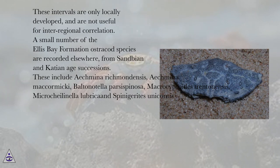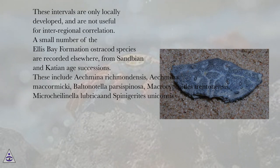A small number of the Ellis Bay Formation ostracod species are recorded elsewhere, from Sandvian and Cadian age successions. These include Echmena richmondensis, Echmena mccormicky, Baltanatella parsispinosa, Macrocypiroids trentanensis, and Microcalinella lubricant spinagirides unicornis.